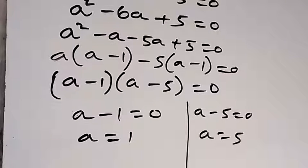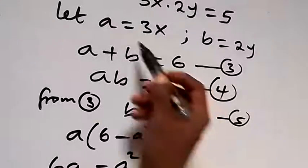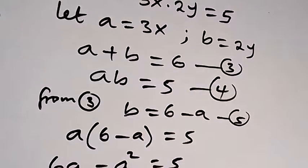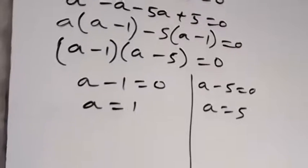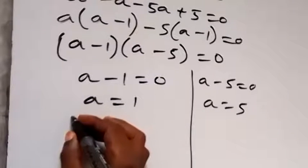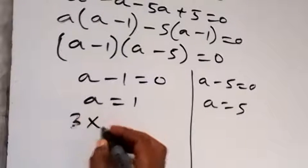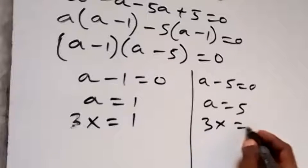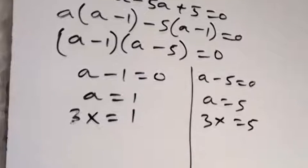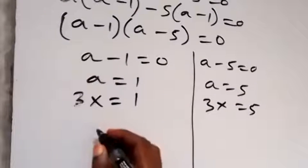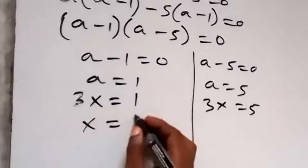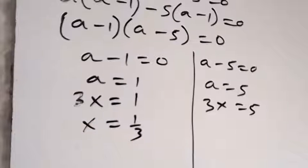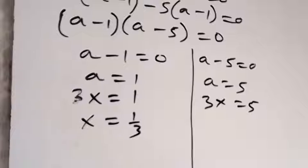Since we defined a as 3x, we substitute back. When a equals 1, then 3x equals 1, so x equals 1 over 3. When a equals 5, then 3x equals 5, so x equals 5 over 3.